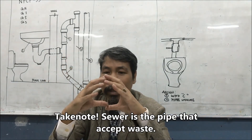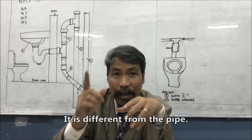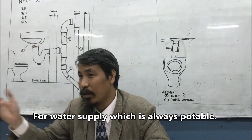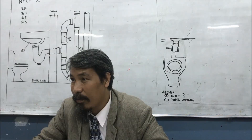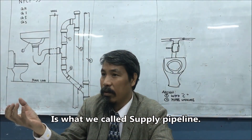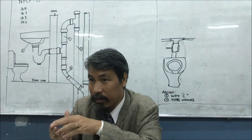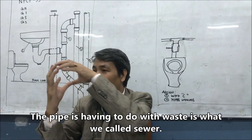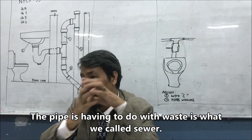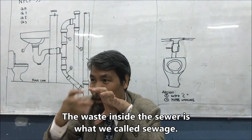Take note: the sewer is the pipe that accepts waste. It is different from the pipe for water supply which is always potable. Clean water is supplied by the water line. But for waste, that is what we call the sewer — the pipe that deals with waste. So the waste inside the sewer is what we call sewage.